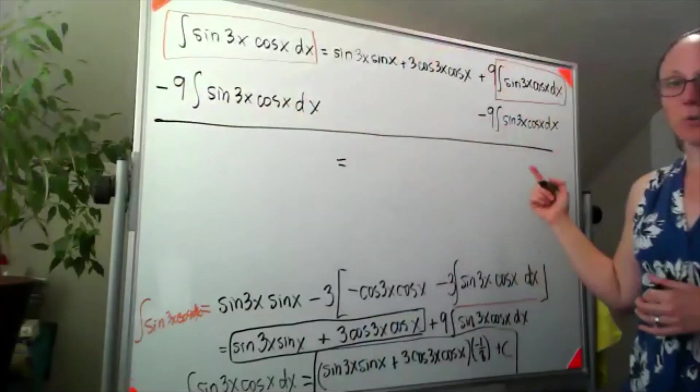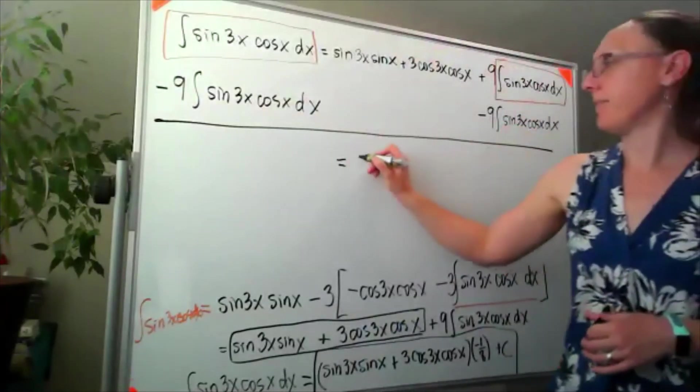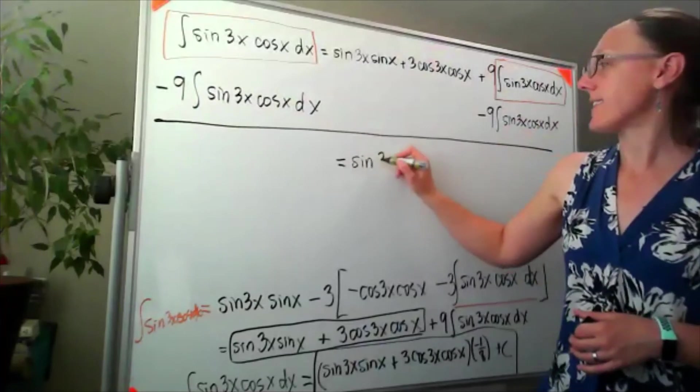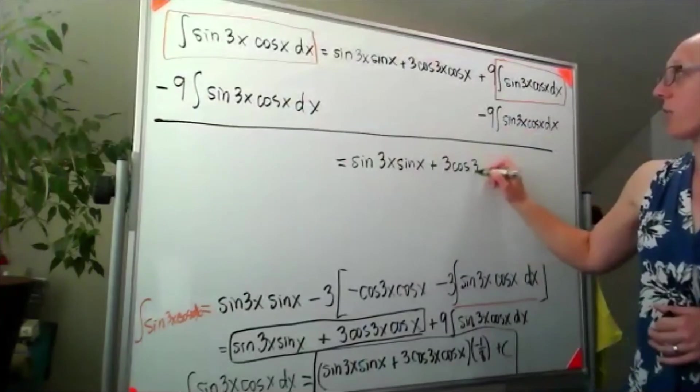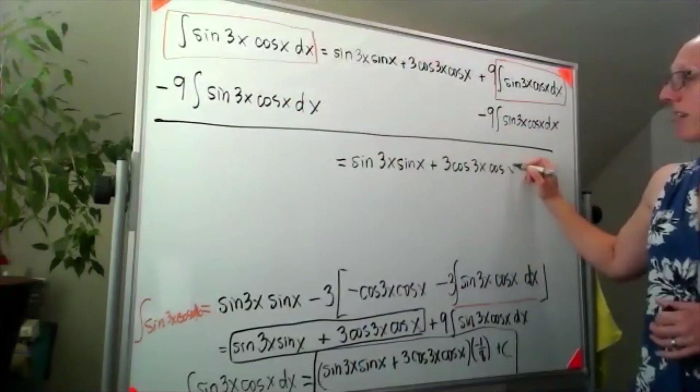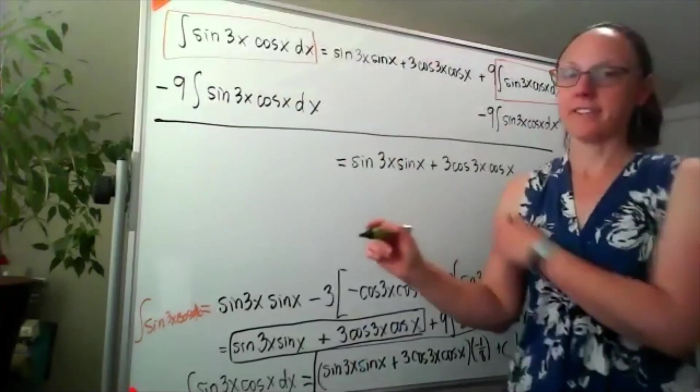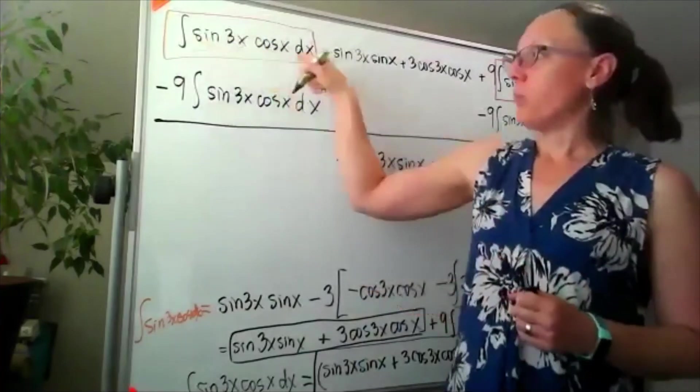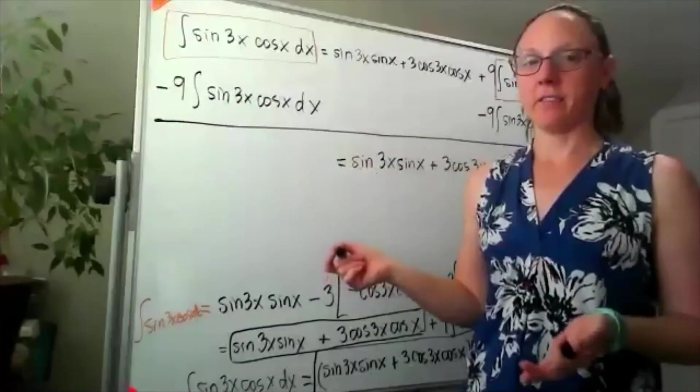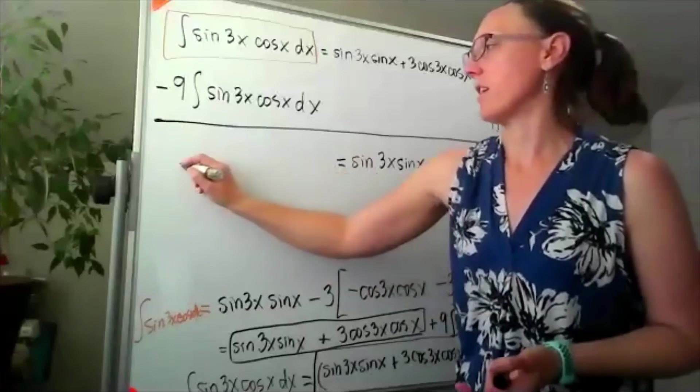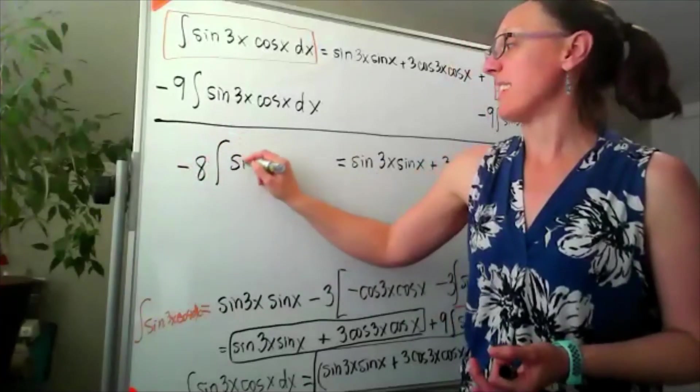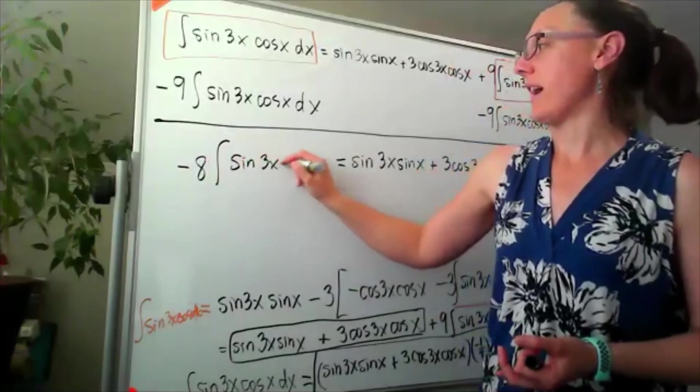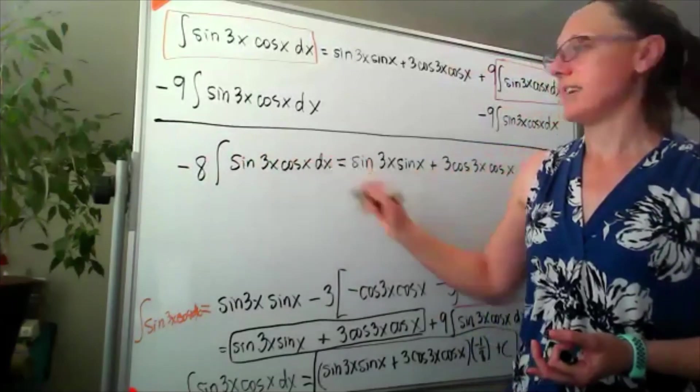Well, that means that on the right-hand side these are gone, and I've got sine 3x sine of x plus 3 cosine 3x cosine of x. And on the left-hand side I had one of these minus 9 of the same thing, which means I'll end up with negative 8 of these integrals - negative 8 times the integral of sine 3x cosine x dx.